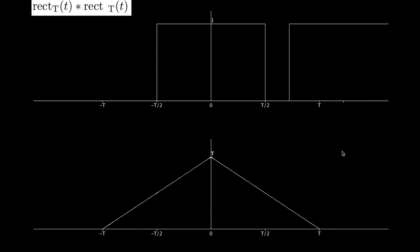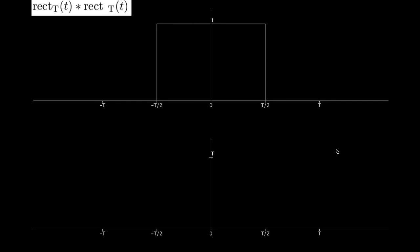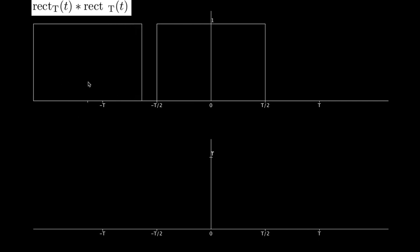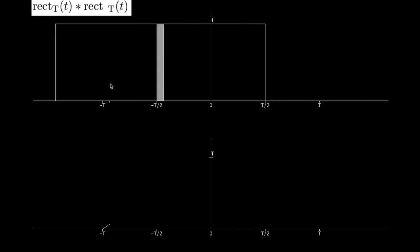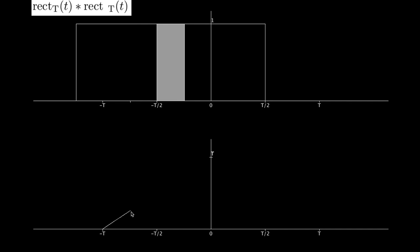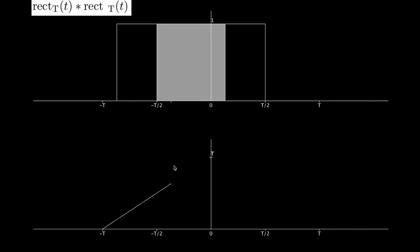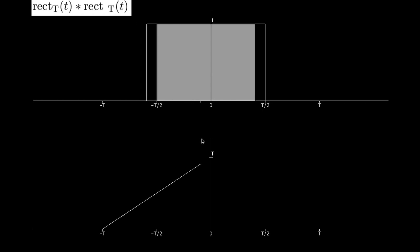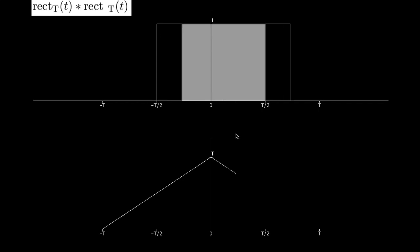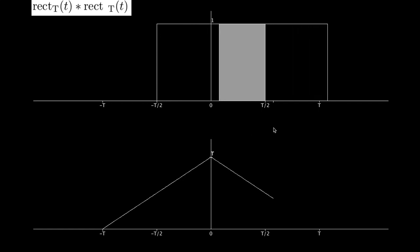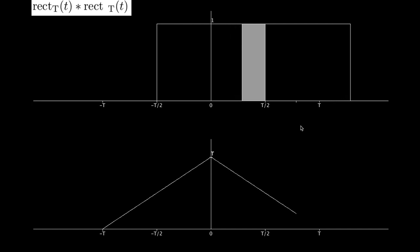Let's take a look one more time. As I slide it, they don't overlap, then there's a slight overlap and the value is increasing on the graph, increasing until there's a maximum overlap, and then as I shift more to the right the overlap is decreasing and therefore the value of the convolution is decreasing.